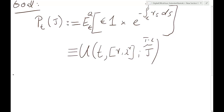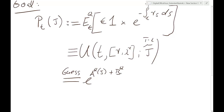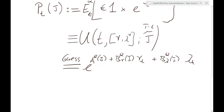From Feynman-Kac, we know we can solve that conditional expectation by solving the PDE that u must fulfill. Taking a shortcut as in Vasicek, I guess that u has an exponential affine shape. We then use the guess-and-verify method to confirm the guess is correct and determine the coefficients.